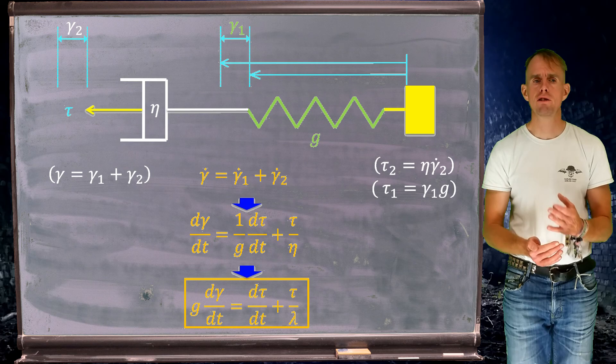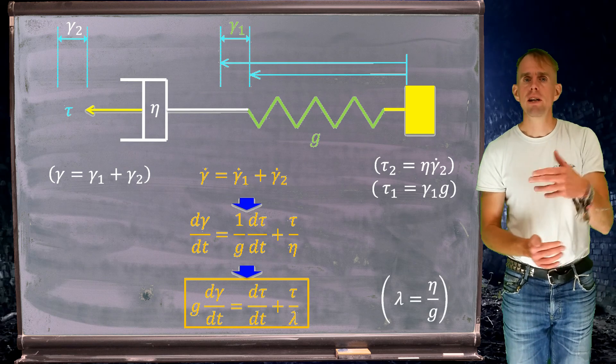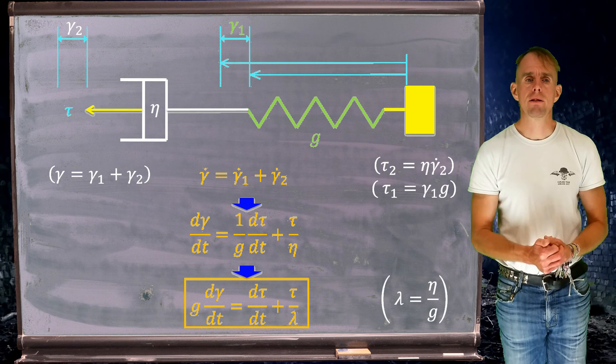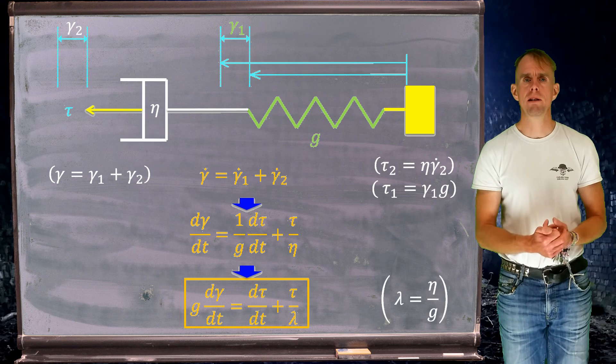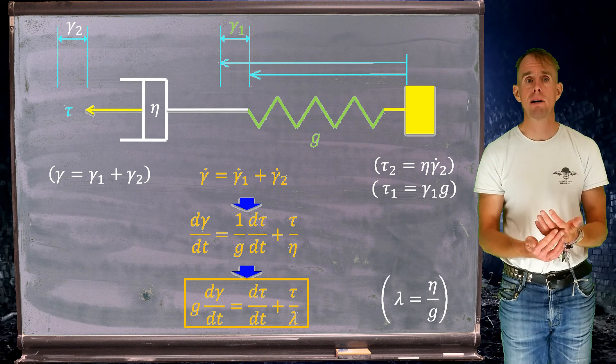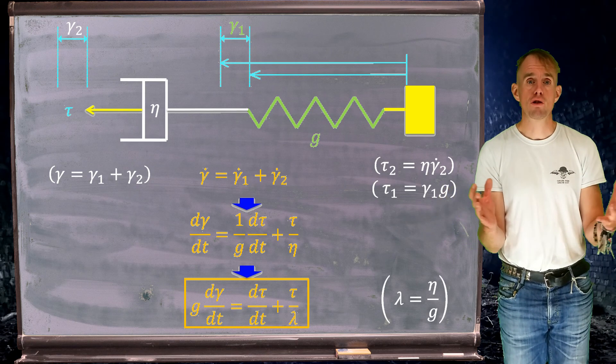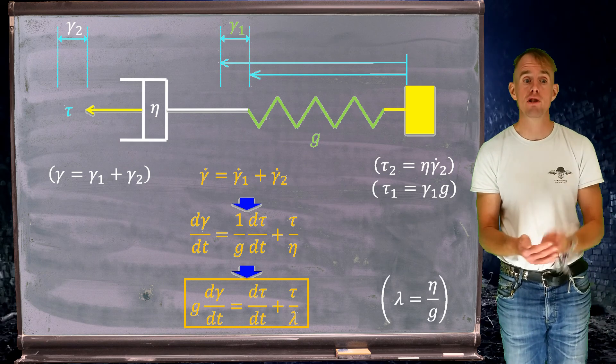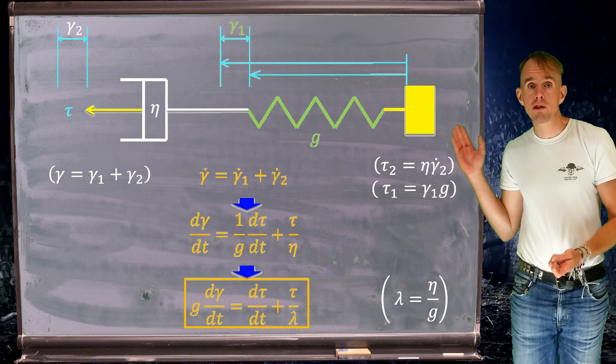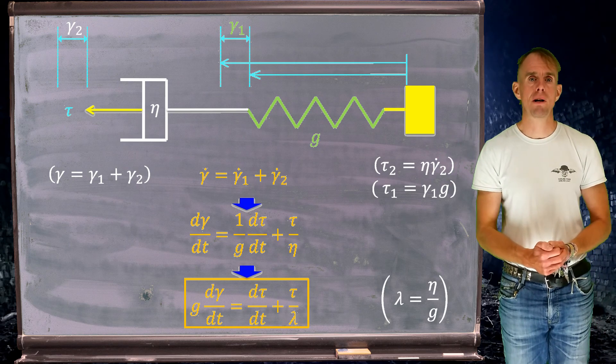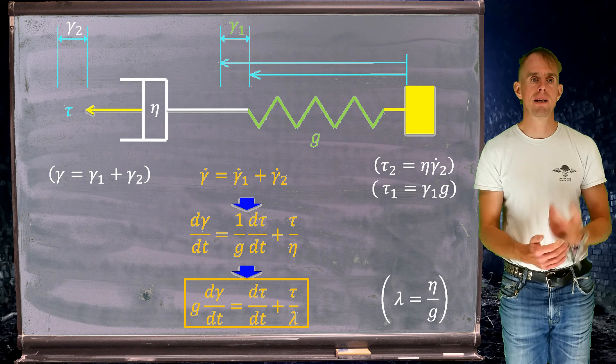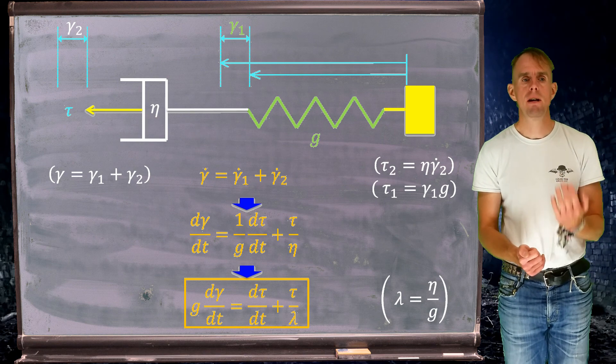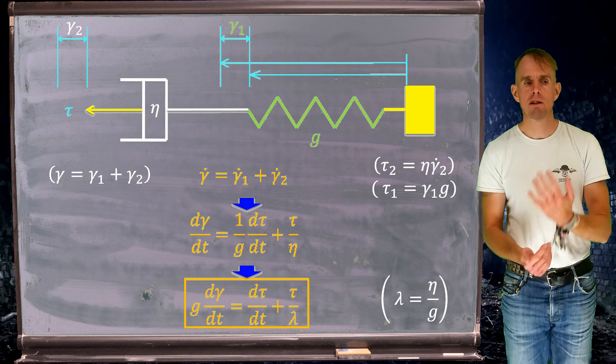Now we're going to introduce a time scale. As we'll see in a few minutes, the concept of a relaxation time is very relevant when thinking about how quickly stress in a polymer system relaxes. Our relaxation time we'll define as lambda equals eta over g. Using this substitution in our Maxwell expression, we get g d gamma dt equals d tau by dt plus tau over lambda.